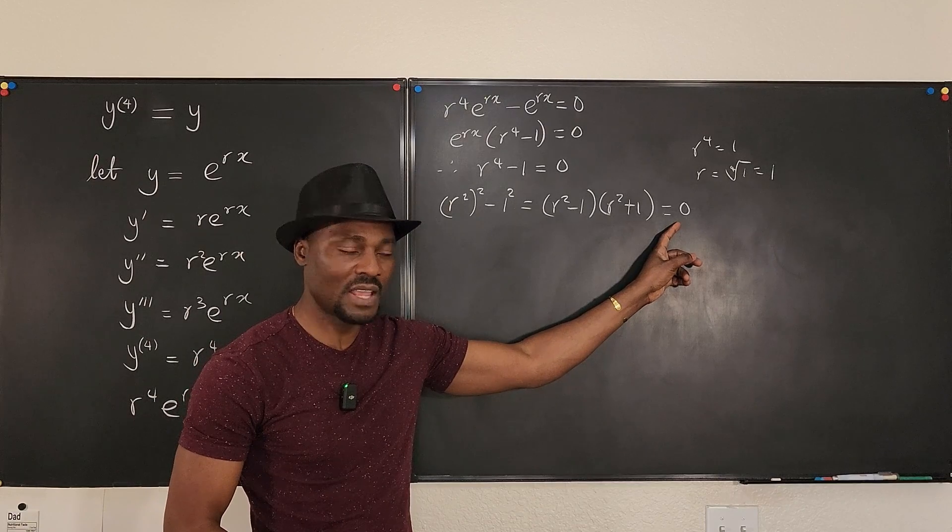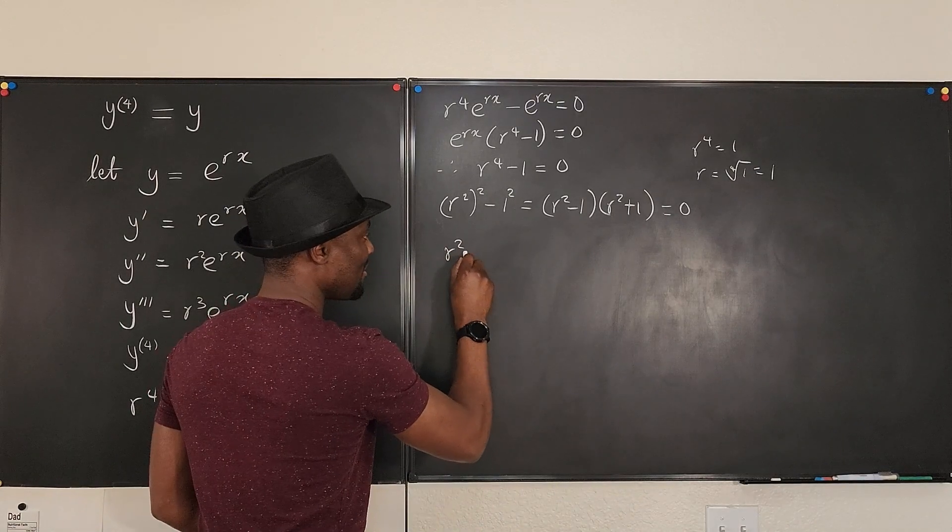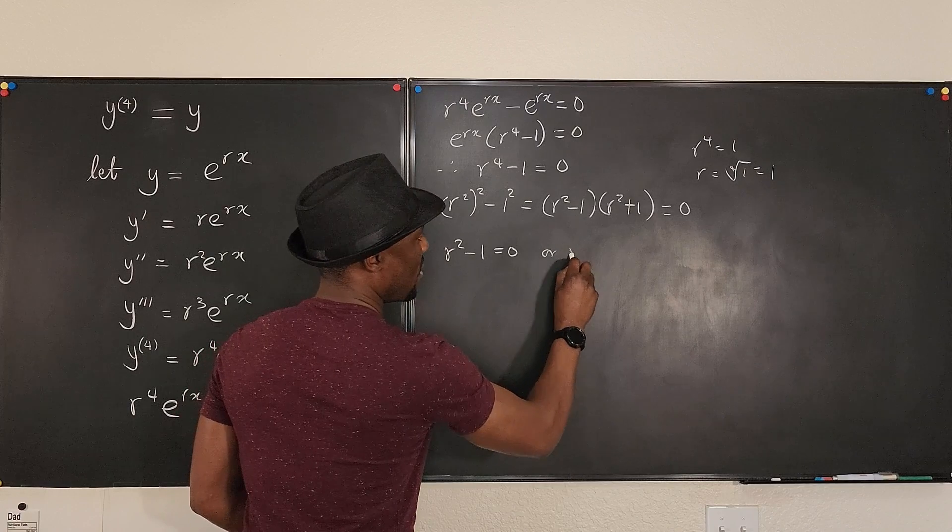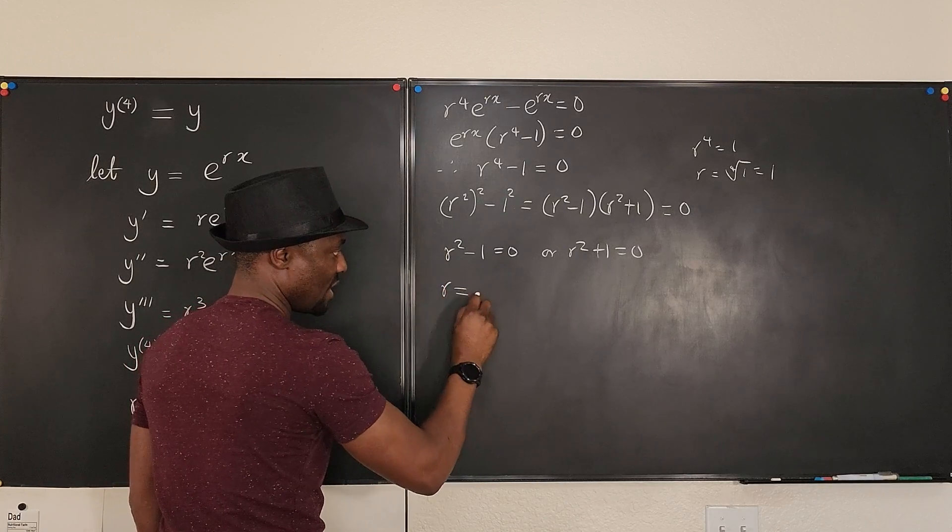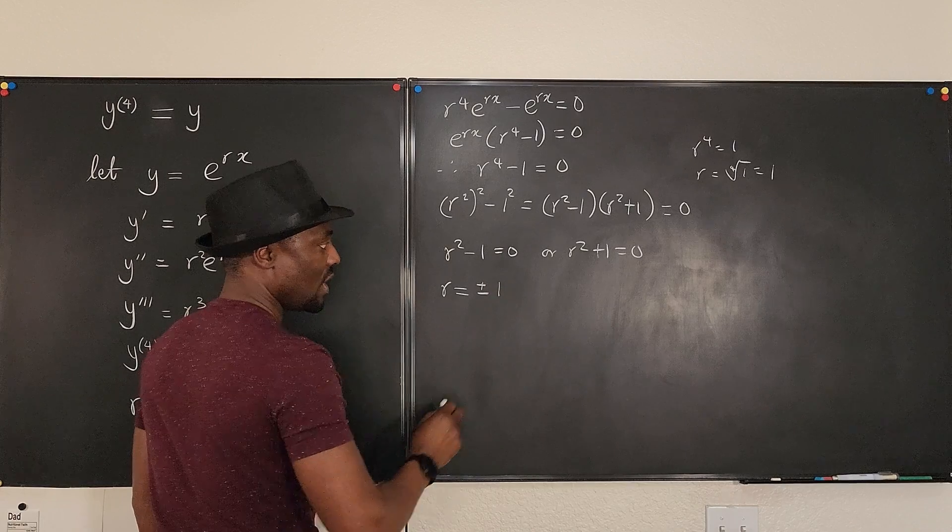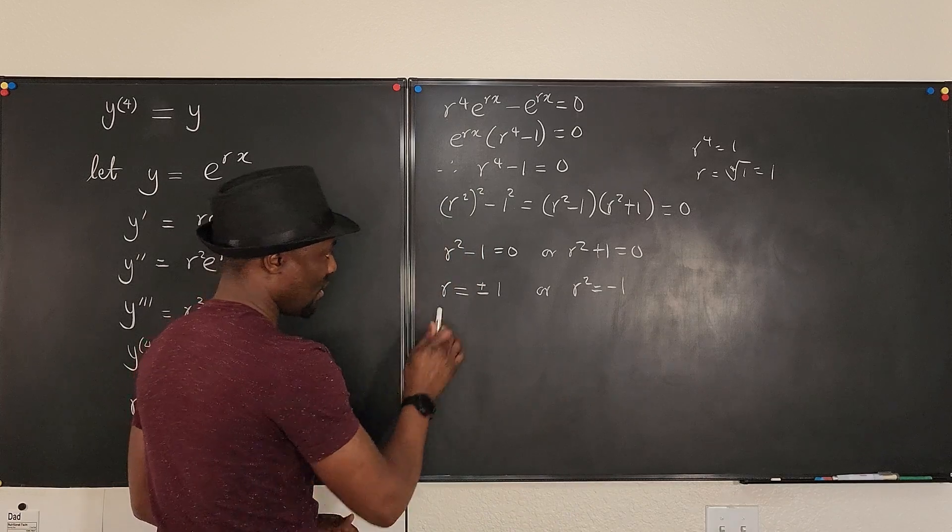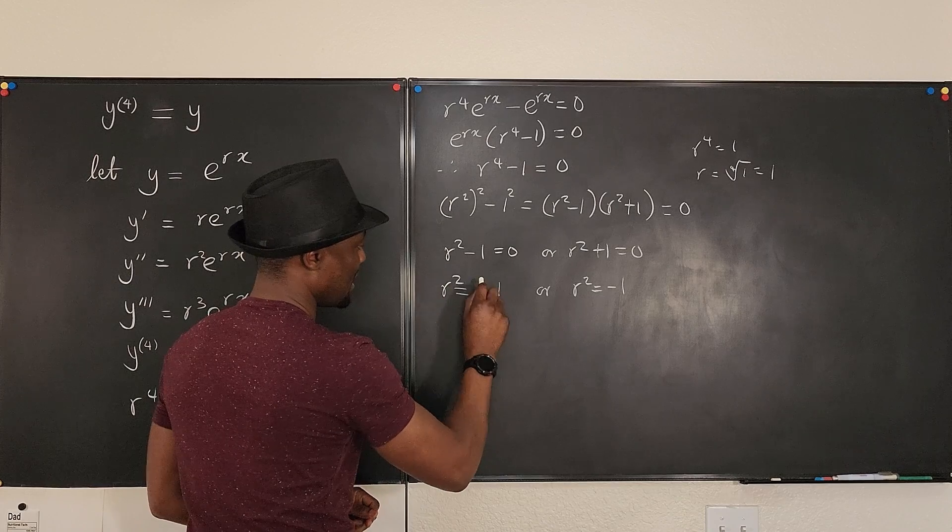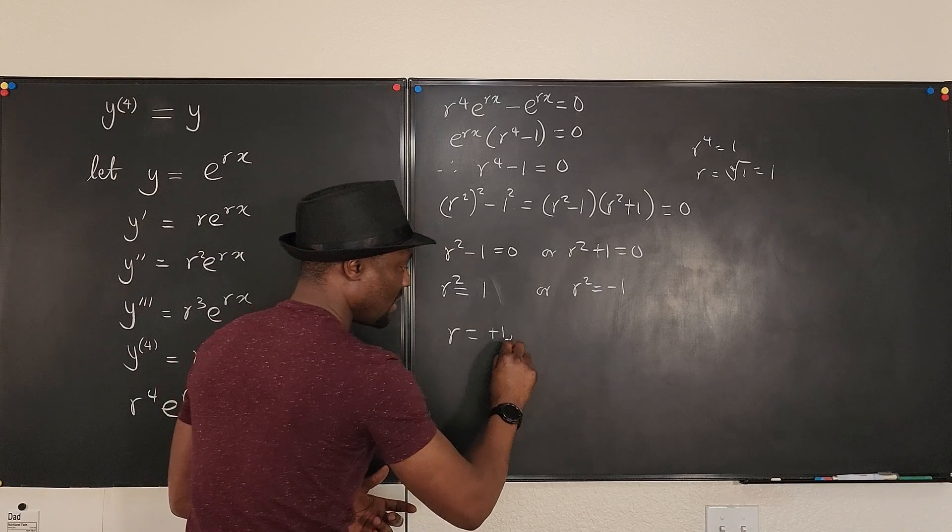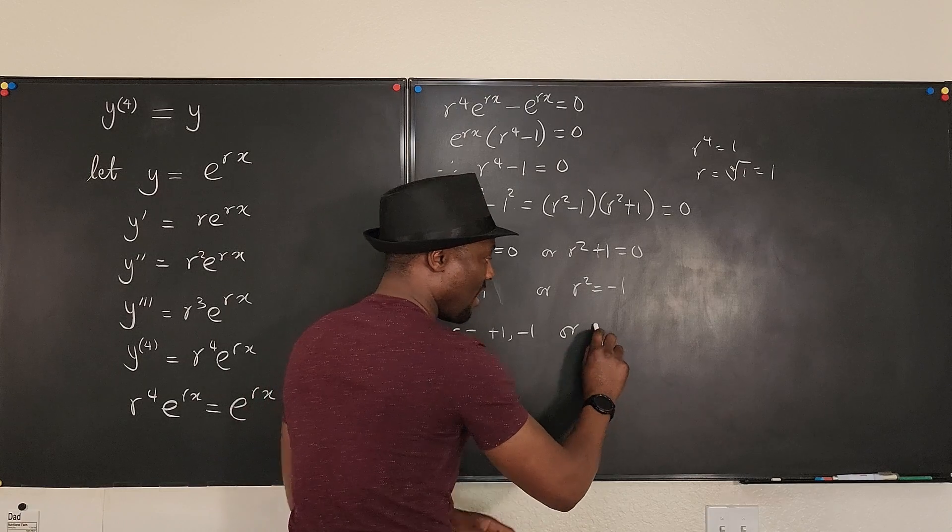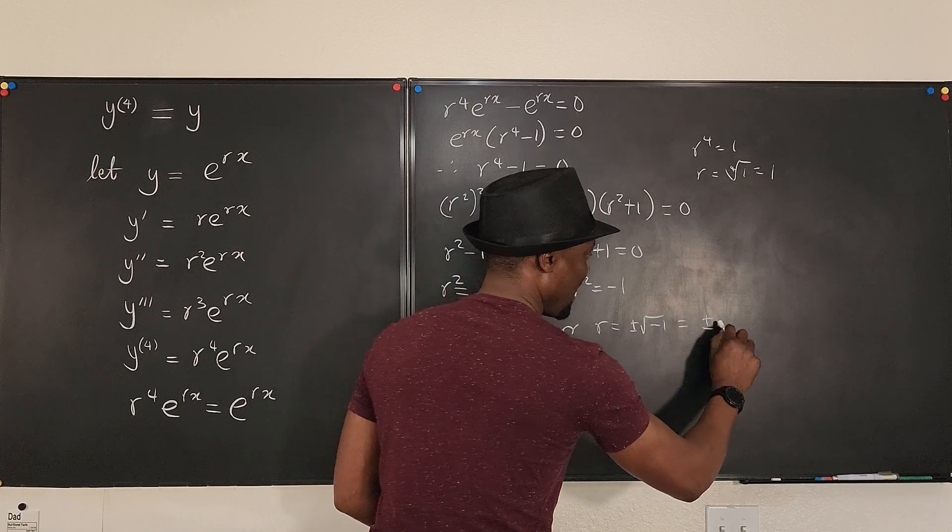So now we have another product, and we know that either of these can be zero. So we're going to say r squared minus one equals zero, or r squared plus one equals zero. So if we solve for r, we're going to get r in this case will be equal to plus or minus one. Or here, we're going to say r squared equals minus one. So if we take the square root, that r will be, r squared equals one. And then you have r equals plus one, or minus one. Or here we have r will be equal to plus or minus the square root of minus one, which is plus or minus i.